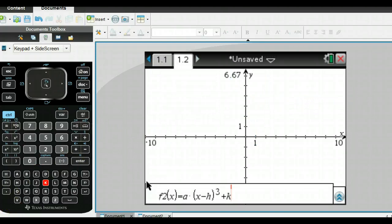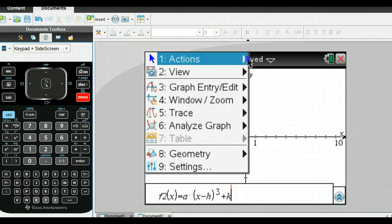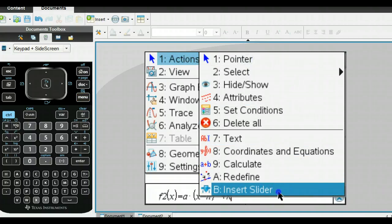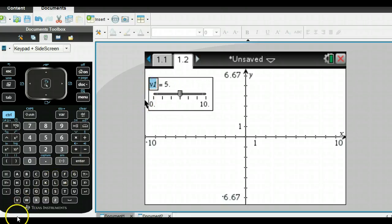Here's my next function, which is the generic cubic that we were talking about. What we want to do with this is get three sliders. So we'll go to Menu and do Actions, and then all the way down to Insert Slider. There it is. I'll put in three of these.